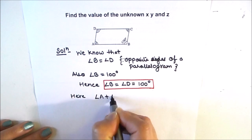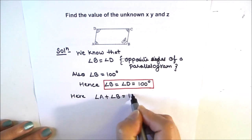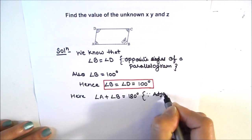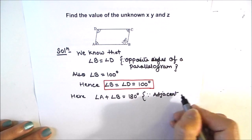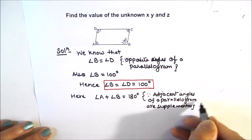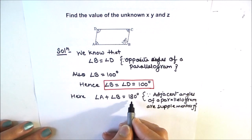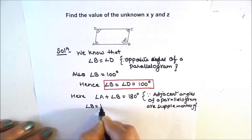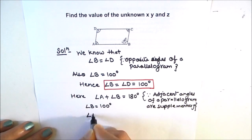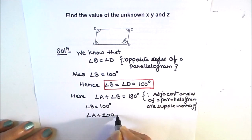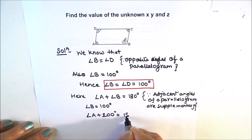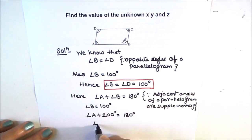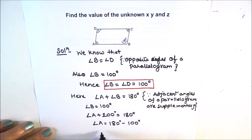Now let's find the other two angles, A and C. Angle A plus angle B equals 180 degrees, since adjacent angles of a parallelogram are supplementary. Putting the value of angle B — which is 100 degrees — we get angle A plus 100 degrees equals 180 degrees. This gives angle A as 180 minus 100, which equals 80 degrees.